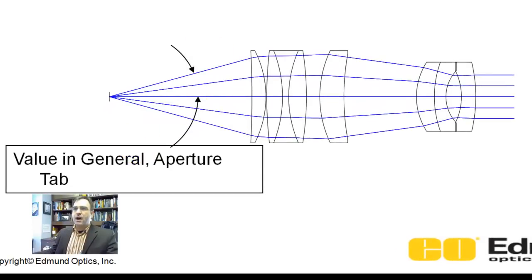There's also the object cone angle. This is this half angle here. If you want to set the angle directly, this is kind of, I was playing around with a microscope objective. This is an apochromatic microscope objective.